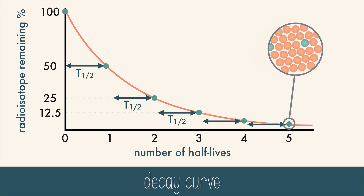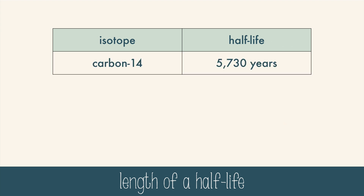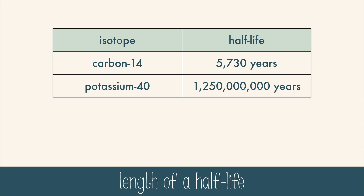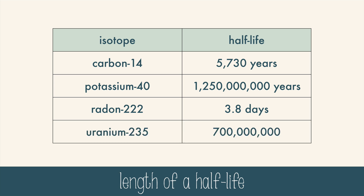The length of a half-life varies between each radioisotope — some are fractions of a second, some are billions of years. Carbon-14's half-life is 5,730 years. Potassium-40 is 1.25 billion years. Radon-222 is 3.8 days. And uranium-235 is 700 million years.